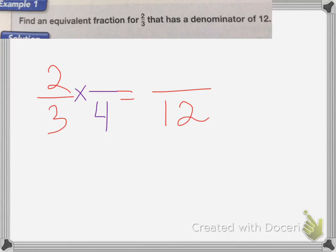And since this has to equal, since my fraction has to equal 1, I have to multiply the top by 4 as well. Because 4 fourths is equal to 1. And I know if I multiply any number by 1, it's the same number.